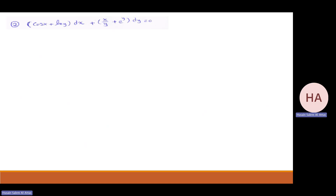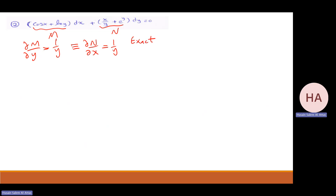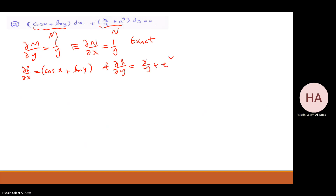The next one: sin x plus ln y — this is m, and this is n. Partial m with partial y: sin x is zero, so one over y. Partial n with partial x is also one over y. So these are equal — it's exact. Now I start with one of them. Let me start with this one. I have f of x and y. The integral of cosine is sine x. The integral of ln y — since ln y is just a constant — will be x ln y, plus function of y.